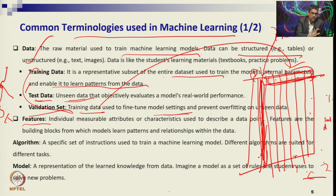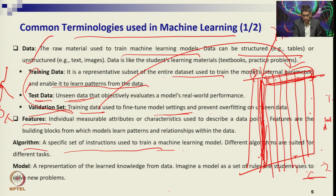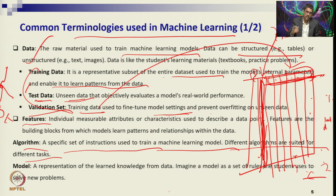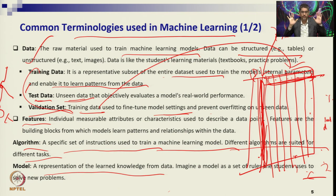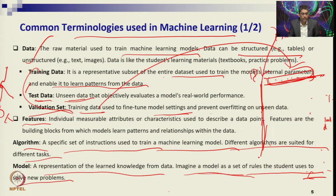Features describe the data characteristics. Then there is the algorithm — a specific set of instructions used to train the machine learning model. Different algorithms are used for different situations: sometimes linear regression, logistic regression, decision tree, random forest, k-means clustering, support vector machine, or principal component analysis — based on suitability and data requirements. Then the model is the final version of your outcome — a representation of the learned knowledge from the data, which becomes your decision support system.